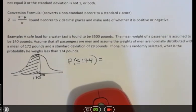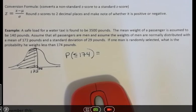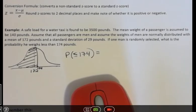So a safe load for a water taxi is found to be 3,500 pounds. The mean weight of a passenger is assumed to be 140 pounds. Assume that all passengers are men and assume the weights of men are normally distributed with a mean of 172 pounds and a standard deviation of 29 pounds. If one man is randomly selected, what's the probability he weighs less than 174 pounds?